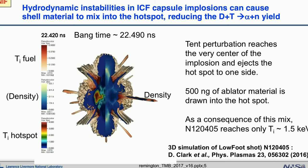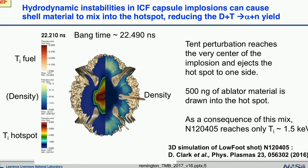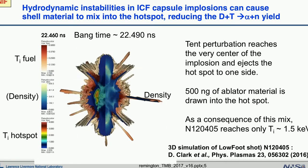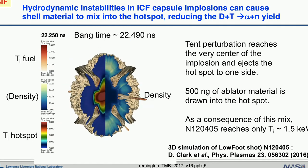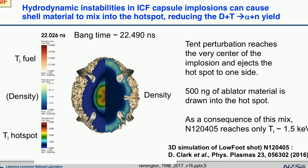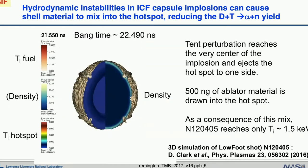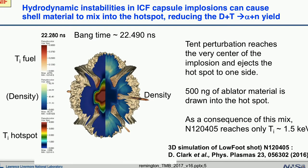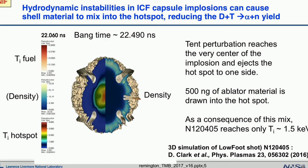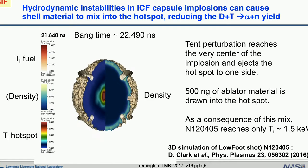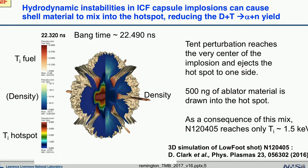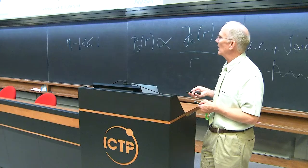This is a capsule implosion simulation for NIF experiments. In the NIF setting, a radiation drive is what forces the capsule to implode inwards. The capsule implosion is sort of the simple part — what the eye catches is all the structures and perturbations that are growing, making what's supposed to be a spherical implosion very complicated. A lot of this leads to hydrodynamic instabilities growing that drive material from the outside down into the very center.